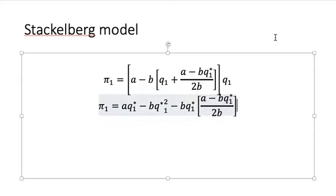Now we can take the derivative of this function. So dπ1/dQ1 equals - this is easy, we're going to get A, we're going to get another B here, so this is going to be 2BQ1 star. This third term is a little bit tricky because we'll have to multiply this across.